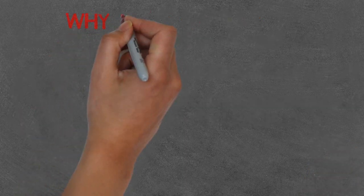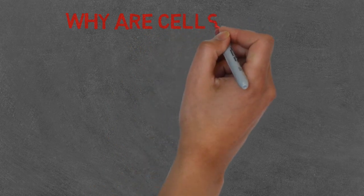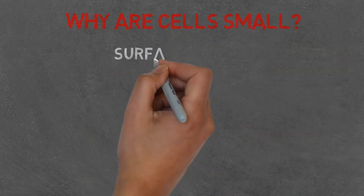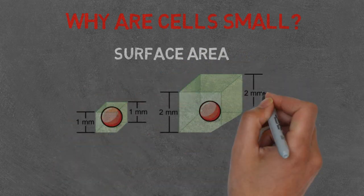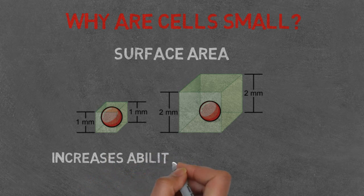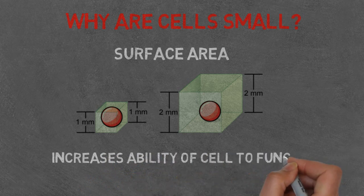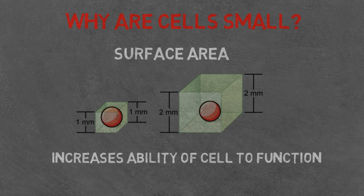But why are cells so small? Cells need sufficient surface area to allow adequate transport of nutrients in and waste out. As the cell volume or size of the cell increases, so does the need for nutrients to be transported in and waste removal to occur. The issue with the size of the cell increasing is that the surface area doesn't increase proportionally, meaning that if the cell's volume gets too large, it can't transport enough nutrients in or waste out.